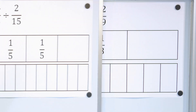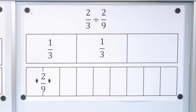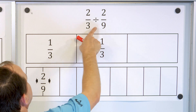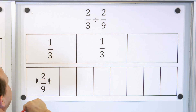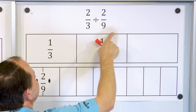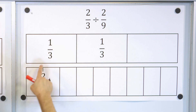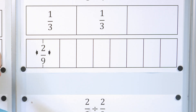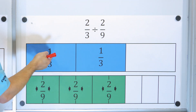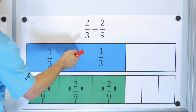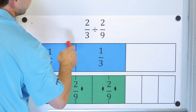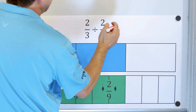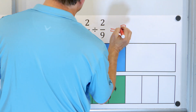Our final problem: what if we have two-thirds divided by two-ninths? Here's one-third and here's another third for a total of two-thirds. Two-ninths is two pieces out of nine. How many times will it go in? Two-thirds divided by two-ninths goes one whole time, then two whole times, then three whole times. The boundaries line up exactly, so it goes three whole times.